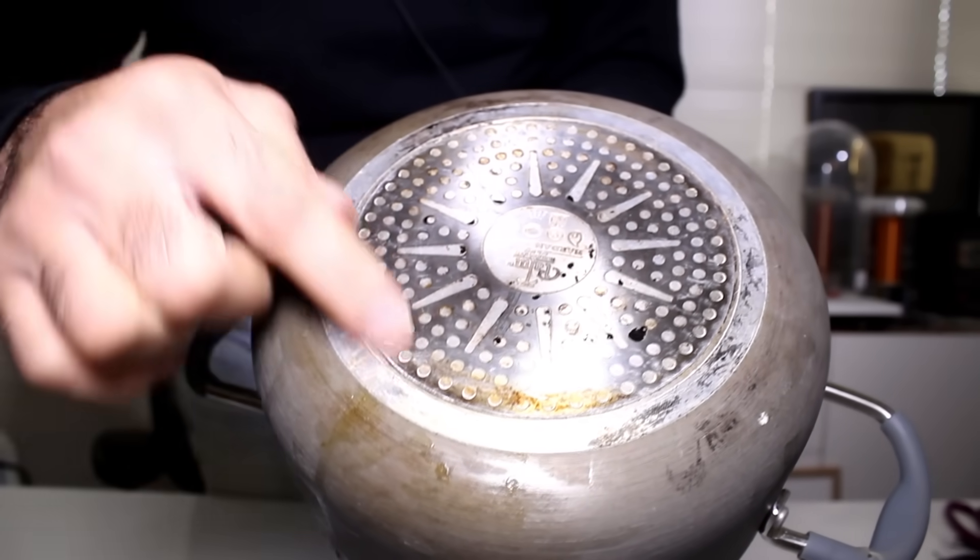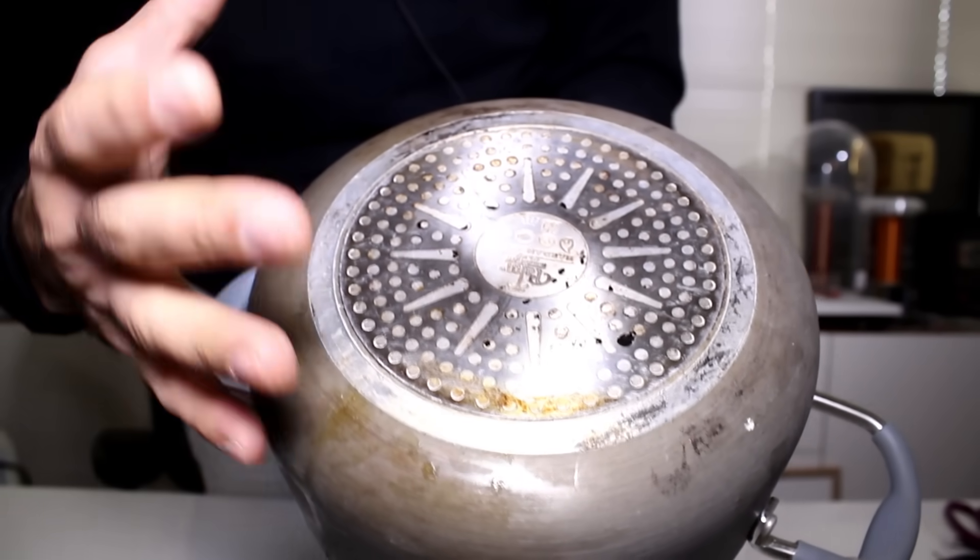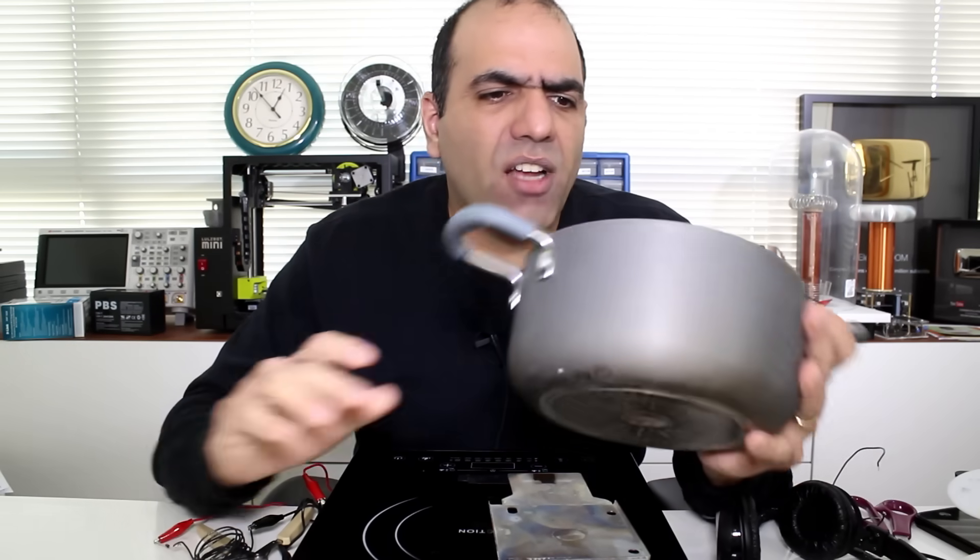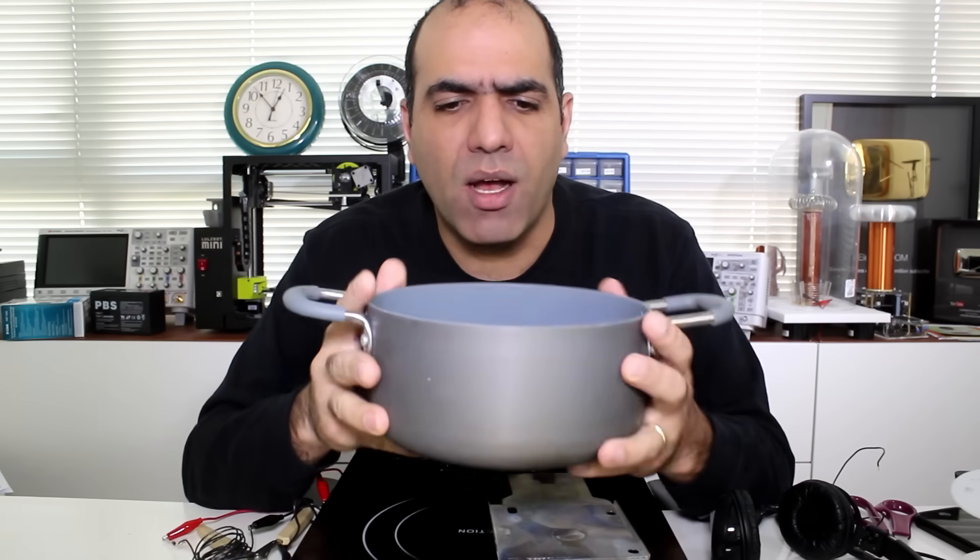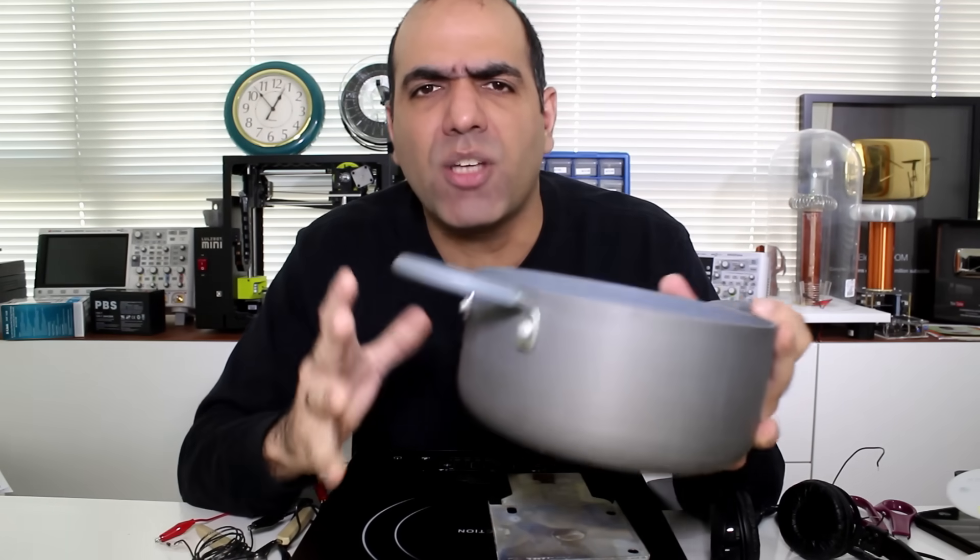You can see in this pot, they put a dedicated plate on the bottom to make it work with the induction cooker. The benefit of induction cooker is that, unlike the electrical heater or gas cooker that a lot of heat can escape around the pot and is wasted, in induction cooker the pot itself heats up. So it's much more efficient and it heats up much faster.